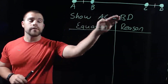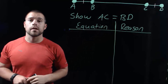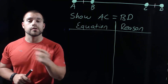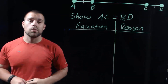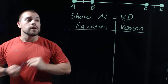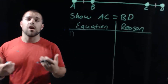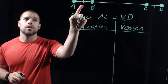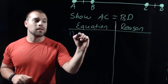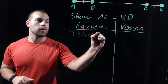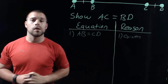In this first example, we're given a diagram and we want to show that the length of AC is equal to the length of BD. We're going to set up a t-chart like we did in part one — on the left side we have our equation, on the right side we provide a reason. The first thing we look for is given information. In the picture I see a congruence marking on AB and a congruence marking on CD, so the length of AB equals the length of CD. Our reason is simply: given.